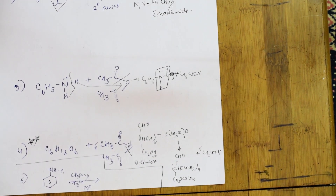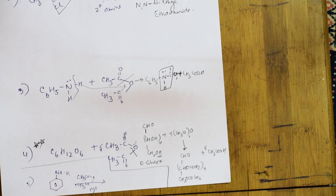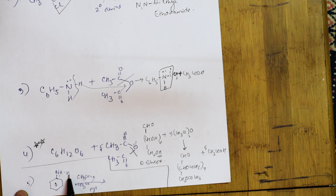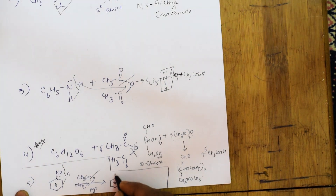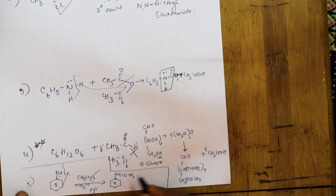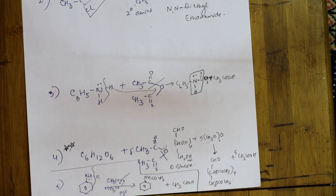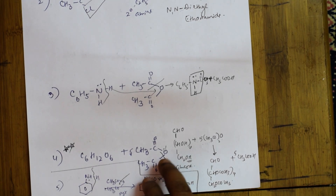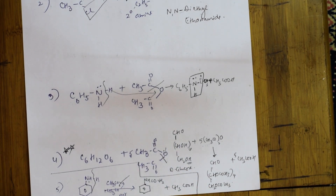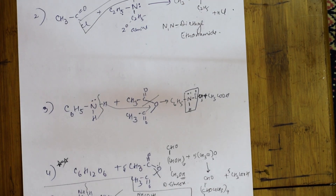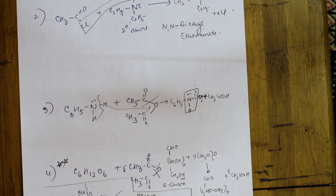Last question: here they have given me aniline and acetic anhydride. Where should I break the bond? Break the bond here. Take out H from aniline and break the bond here in the anhydride. What do you get? You are going to get ring–NH–CO–CH₃ and CH₃COOH. This is your amide product and this is acetic acid. Finally, we are done with acid chlorides. Let us come back and start with one more set of reactions — miscellaneous reactions from the textbook.